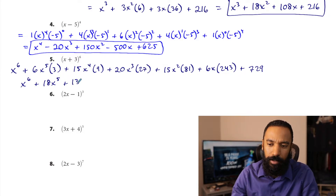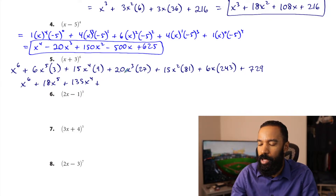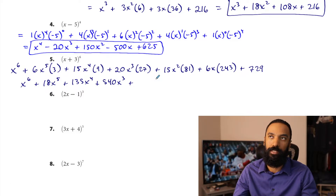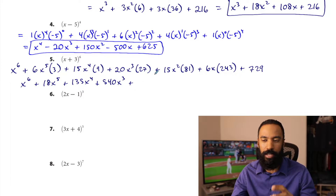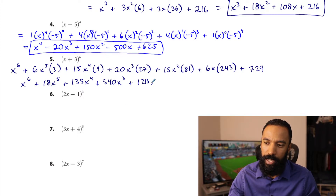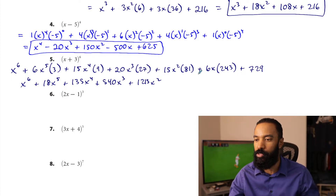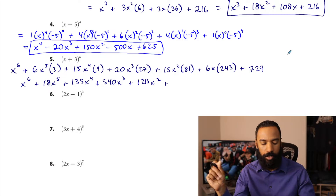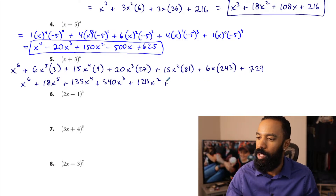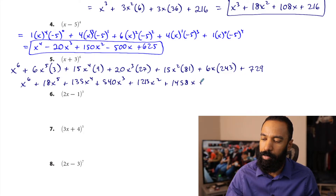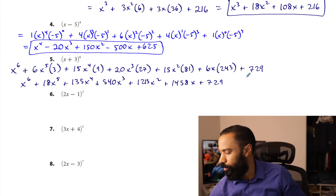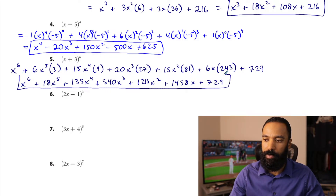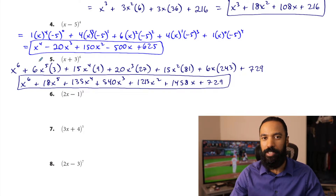Then 15 times 81 is 1,215, so plus 1,215x squared. Then 6 times 243 — using the calculator — is 1,458, so plus 1,458x. Plus 729. That's the final result for x plus 3 to the sixth power — a lot of work, but not as much as if you did it the manual way.